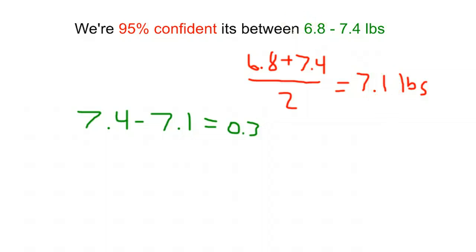That's our center. We always say our best guess, our middle, 7.1 plus or minus our margin of error, our wiggle room, 0.3. And we always like to put our units on there, pounds.